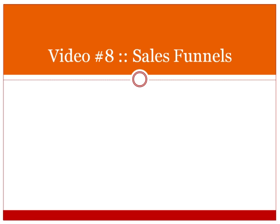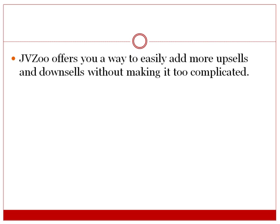Hello and welcome to video number 8. In this specific video I'm going to talk about the JVZoo feature called Sales Funnels. JVZoo offers you a way to easily add more upsells and downsells without making it too complicated. If you saw the previous videos where we talked about mapping out your sales funnel, you realize that adding an upsell and downsell is very powerful.